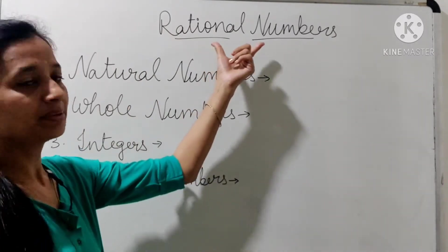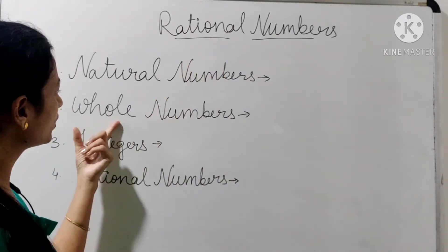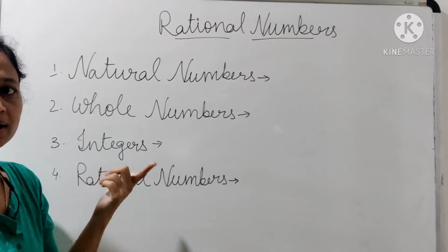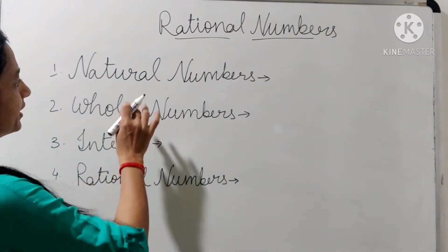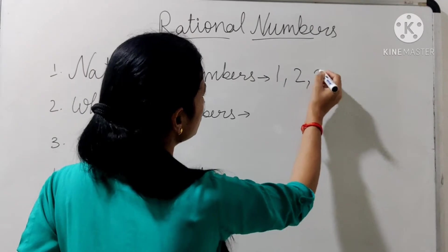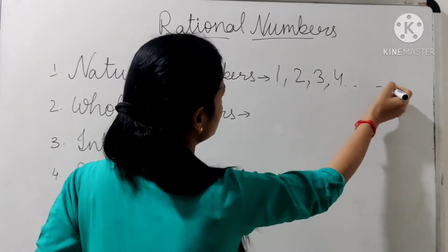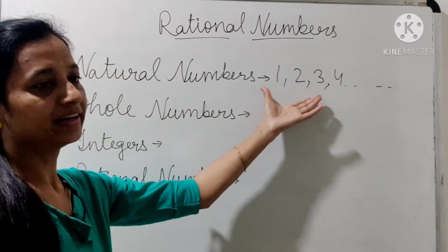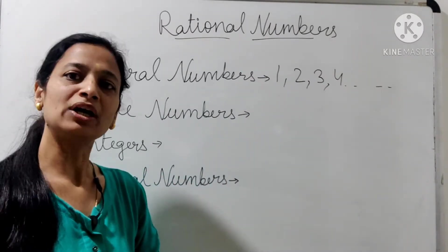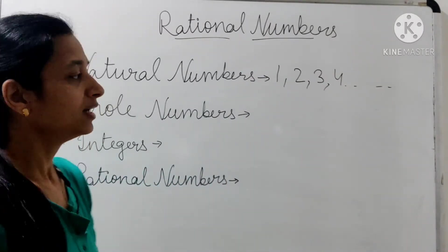Rational numbers को समझने से पहले, पहले हम थोड़ा सा natural numbers, whole numbers, integers को भी देख लेते हैं, कि वो क्या होते हैं. Natural numbers हमारे होते हैं 1, 2, 3, 4 and so on. These all are natural numbers, जो numbers 1 से start होते हैं. इनको हम counting numbers भी कहते हैं.